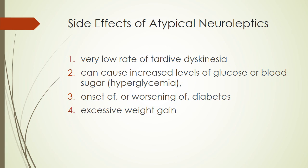For atypical neuroleptics, they do get rid of a lot of the very noticeable side effects and have a very low rate of tardive dyskinesia. However, they can cause increased levels of glucose or blood sugar — otherwise known as hyperglycemia — which in turn can bring on or worsen a person's diabetes, and ultimately they gain excessive amounts of weight. When you see a lot of schizophrenics who are very heavy, it's really not their fault because a lot of what's going on is a slowing of the metabolism so that they're not burning calories.